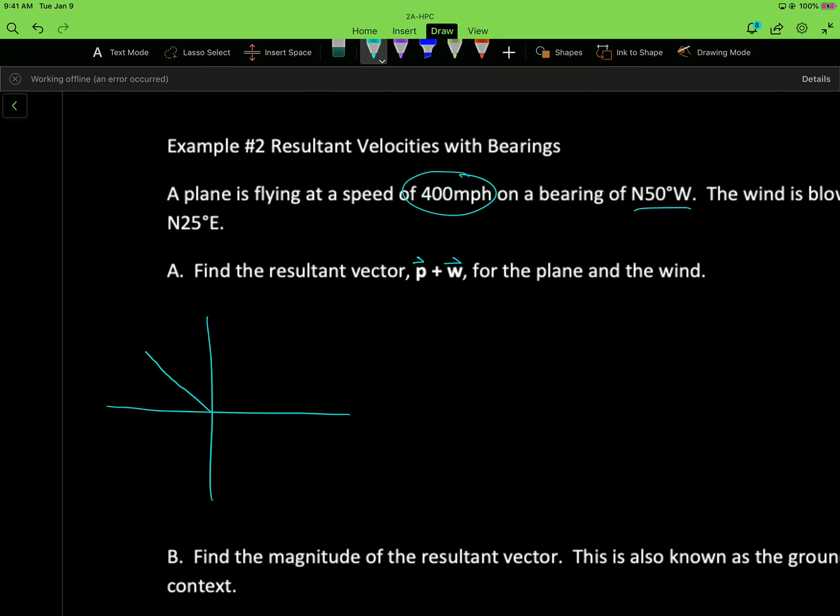So something like this, where this angle is 50 degrees. Now keep in mind that the pure trig angle that we're going to want to use when we convert to components is really going to be 90 plus 50. So we're going to want to use the 140 as our theta in our conversion equations. And the magnitude is 400 miles per hour.